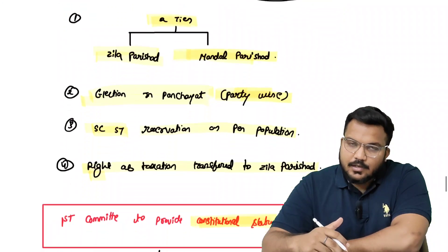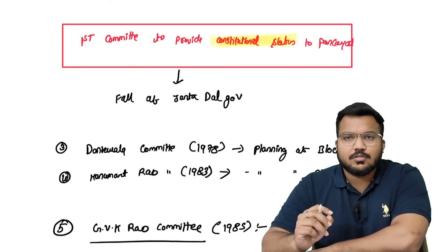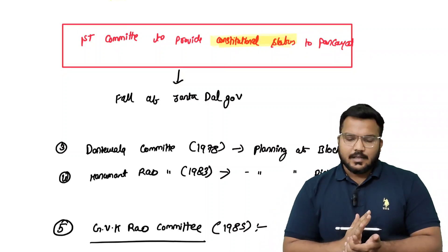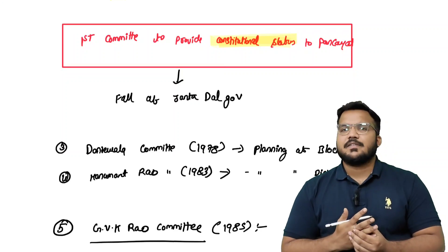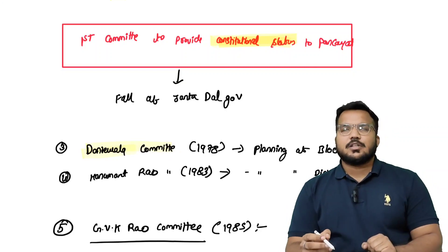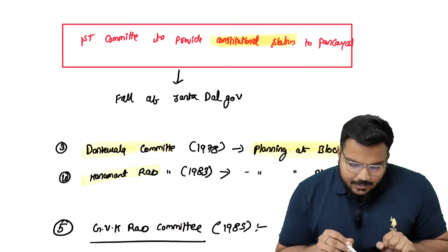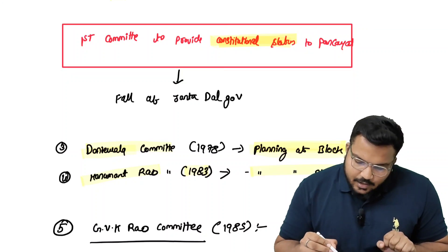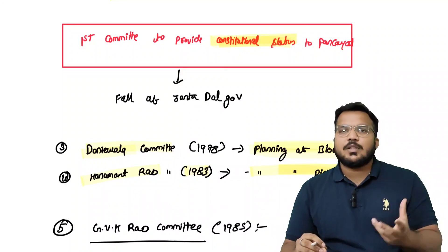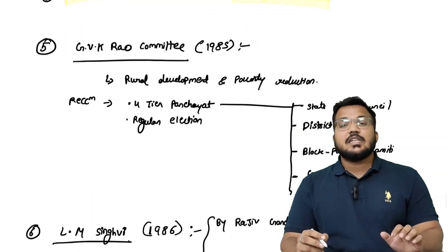Ashok Mehta Committee की recommendations को सब मिल तो जाती हैं, लेकिन Janta Dal की government गिर जाती है। 1978 में INC वापस आती है और Dantwala Committee बैठाती है — जिसकी recommendation थी planning at block level. 1983 में Hanumanthaiah Committee बैठती है — जिसकी recommendation थी planning at district level।